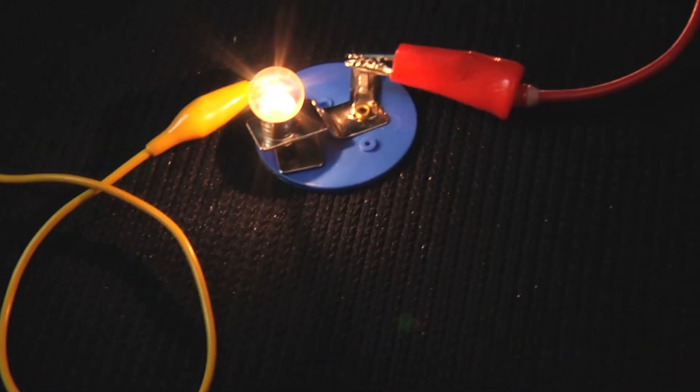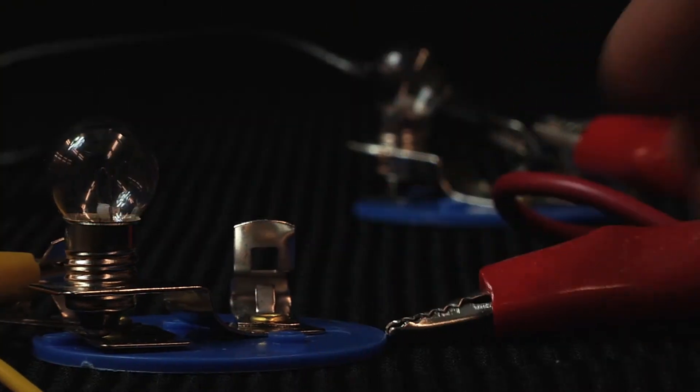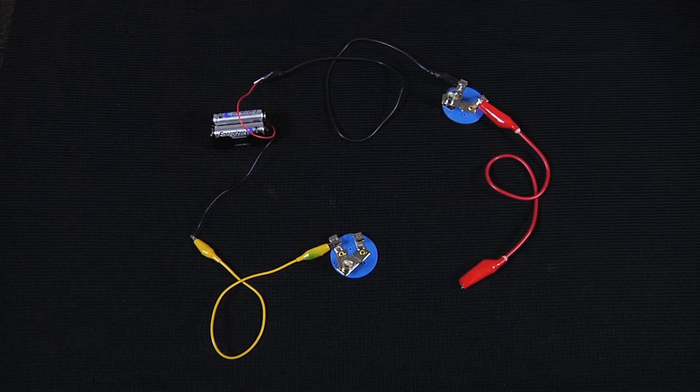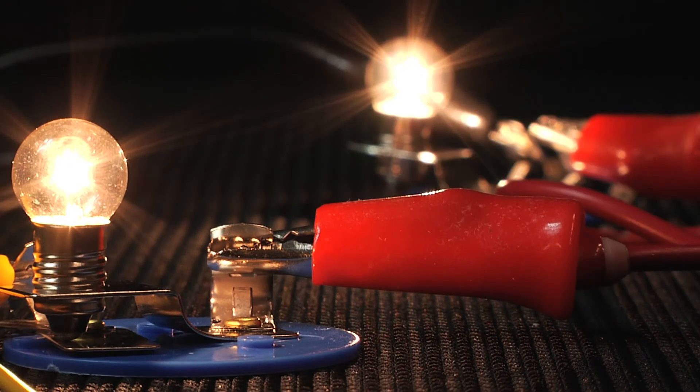If there are multiple bulbs in a series circuit and one of them goes out, the entire circuit will break, causing all of the bulbs to turn off, even if the other bulbs are in good working condition.